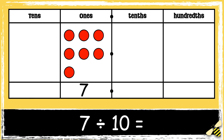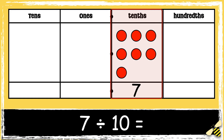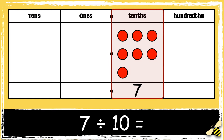Let's have a look at another number. Here's the number seven. Remember, when we divide by ten we move the digits one place to the right.